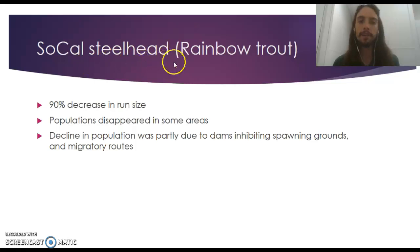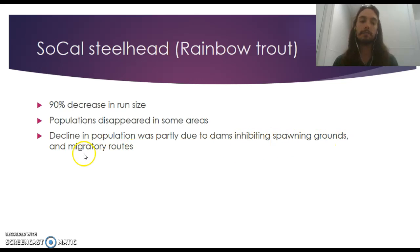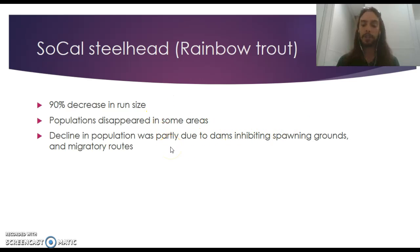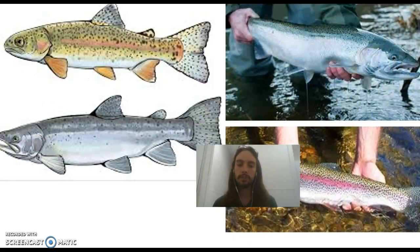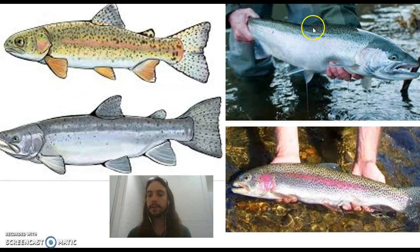The Southern California steelhead trout is our final case study. Steelhead are rainbow trout ready to enter the ocean, undergoing a physiological change. There's been a 90% decrease in run size, with populations disappearing in some areas. The decline is partly due to dams blocking spawning grounds and migratory routes — these fish need gravel and slow-moving water to spawn. Overfishing also plays a role. Interestingly, steelhead and rainbow trout are the same fish — they just look different after the physiological change before entering the ocean.